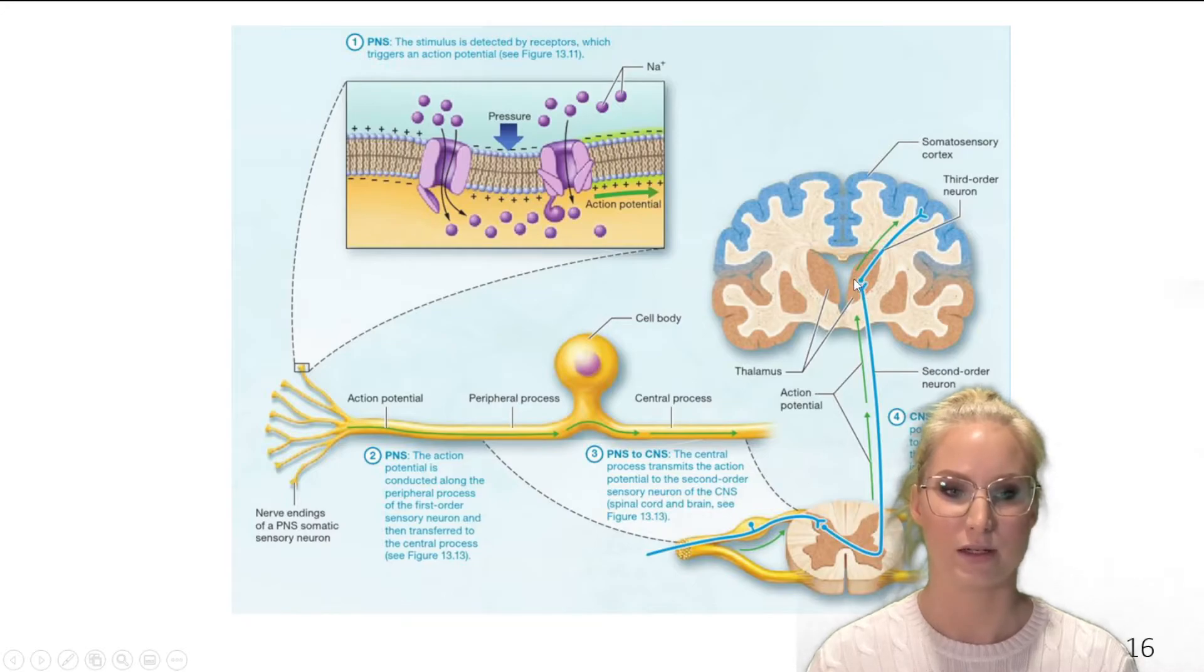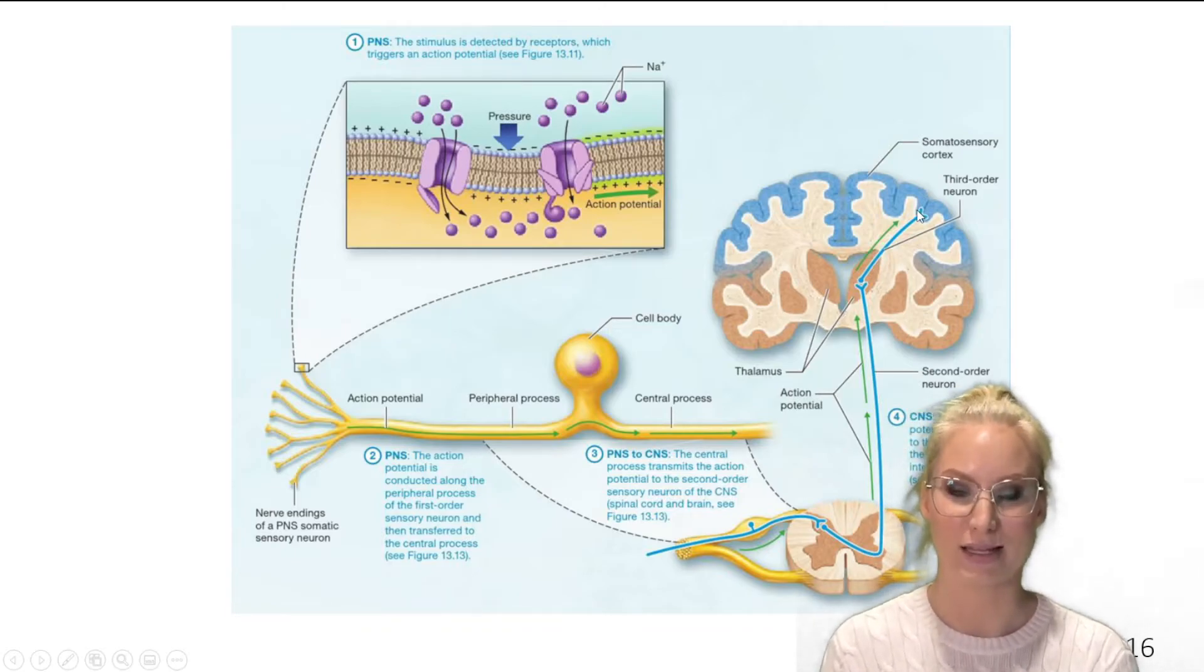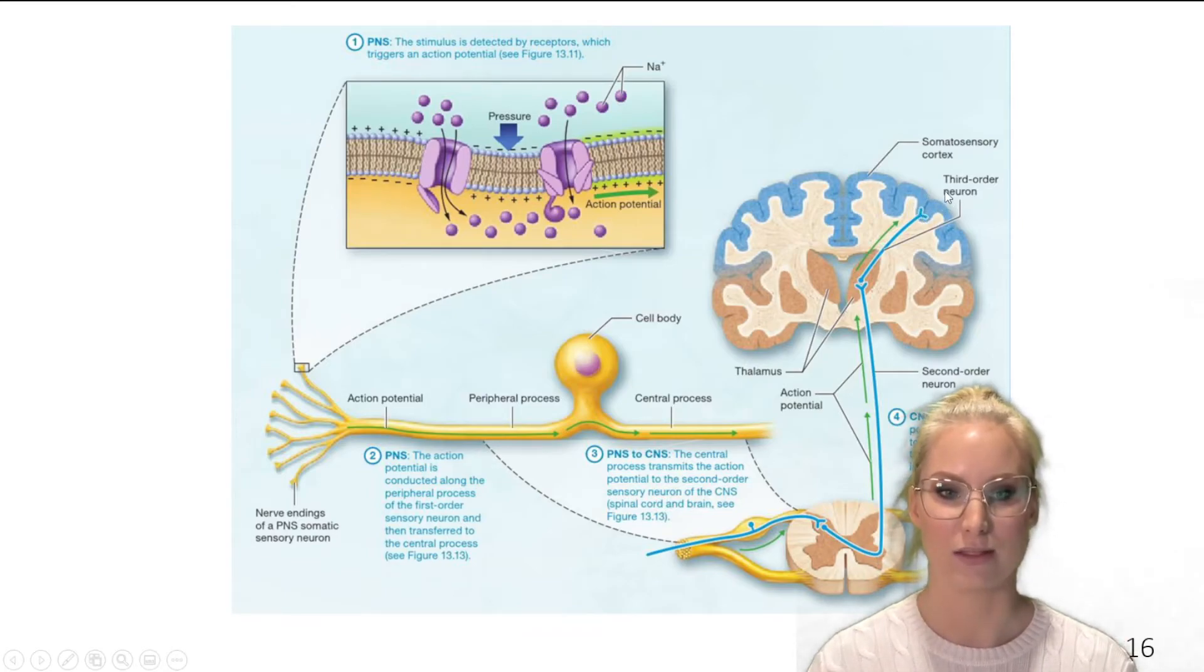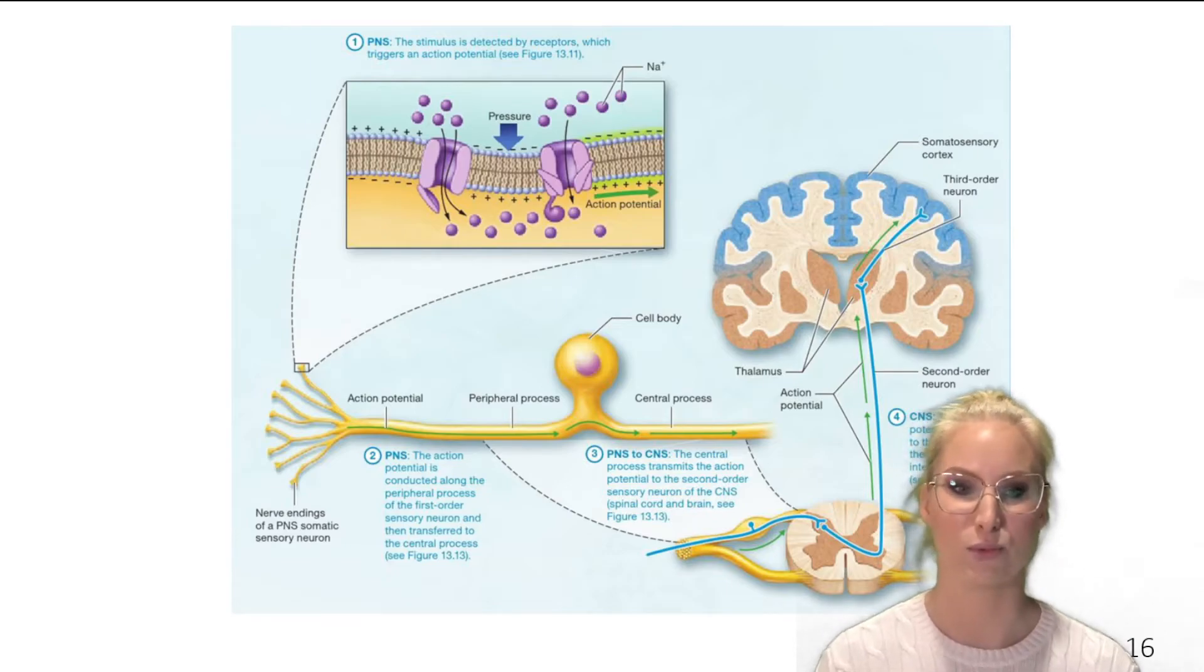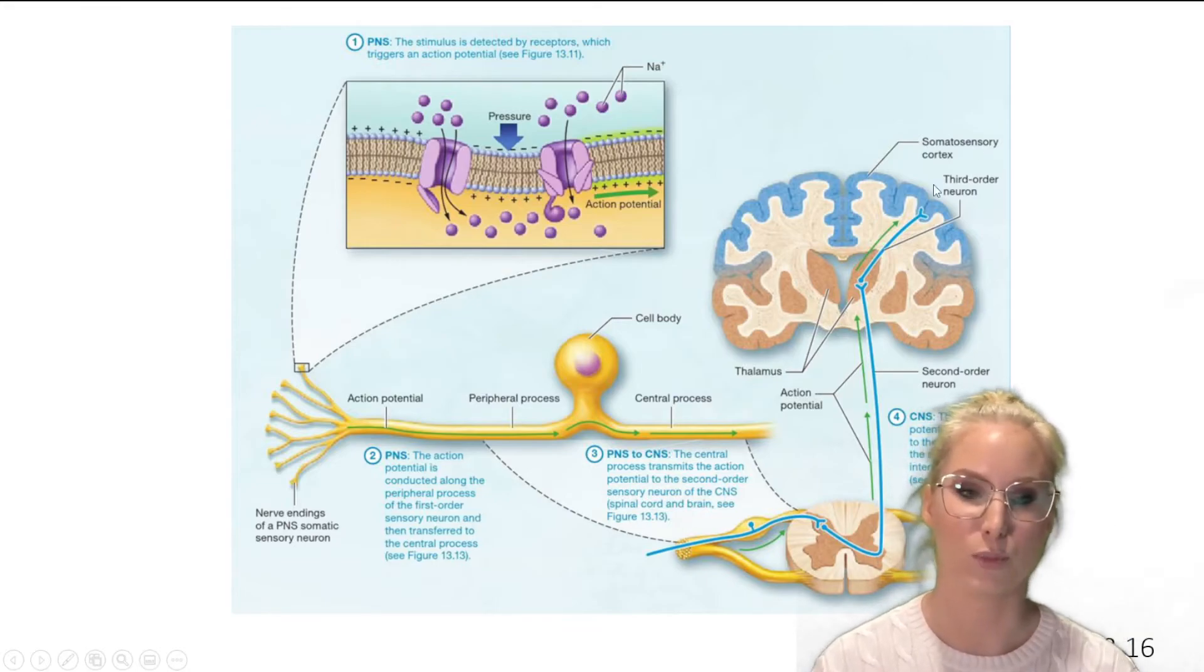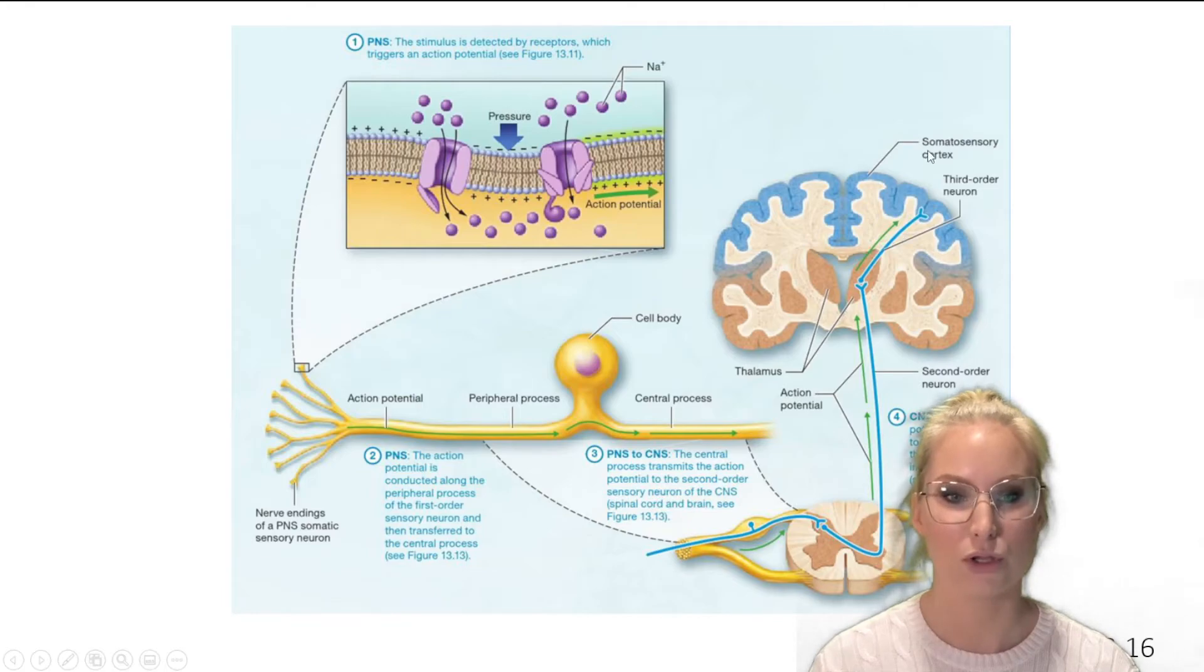So once it has reached the thalamus, it then synapses with a third order sensory neuron and that third order sensory neuron takes that signal up to the cerebral cortex, usually to the somatosensory cortex. So when we're talking about somatosensation, that's all being perceived here in the somatosensory cortex, which is located in your parietal lobe. Now, if we're talking about sound, for example, that would actually be transmitted to the auditory cortex in our temporal lobe. But we're talking about somatosensation today. So what you need to remember is that information is going to the somatosensory cortex.